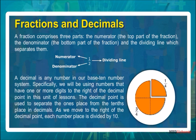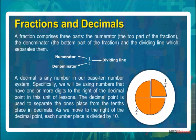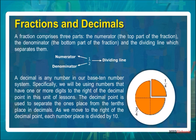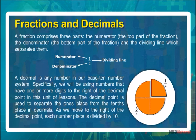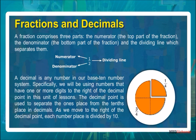A decimal is any number in our base 10 number system. Specifically, we will be using numbers that have one or more digits to the right of the decimal point in this unit of lessons. The decimal point is used to separate the ones place from the tenths place in decimals. As we move to the right of the decimal point, each number place is divided by 10.